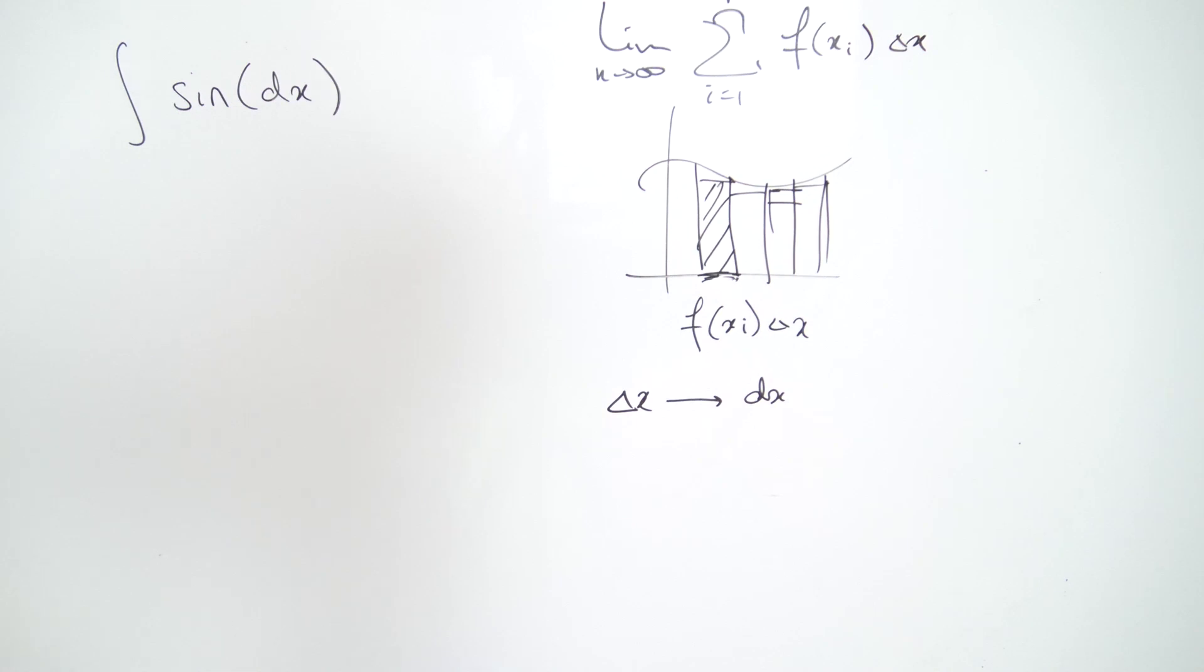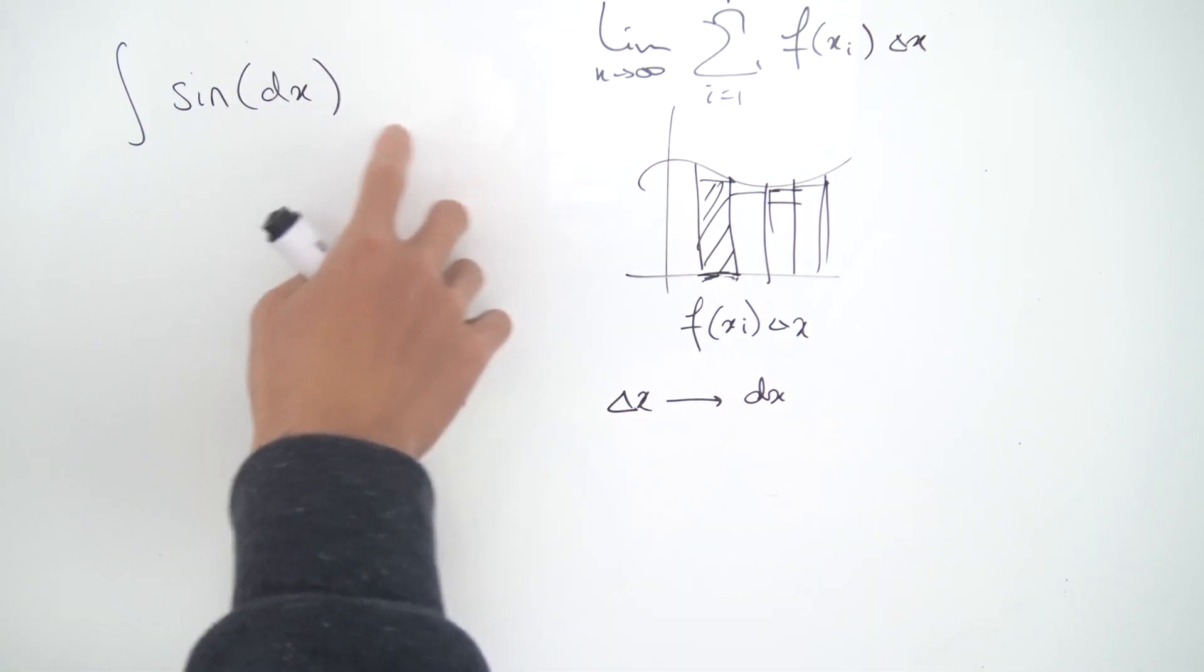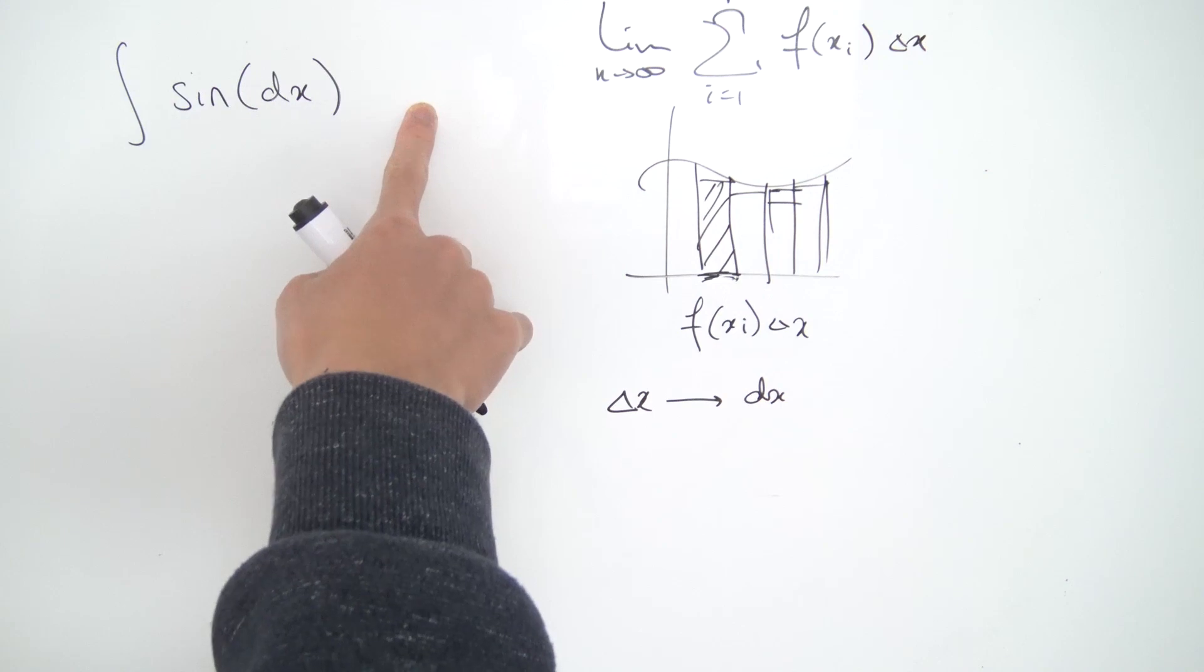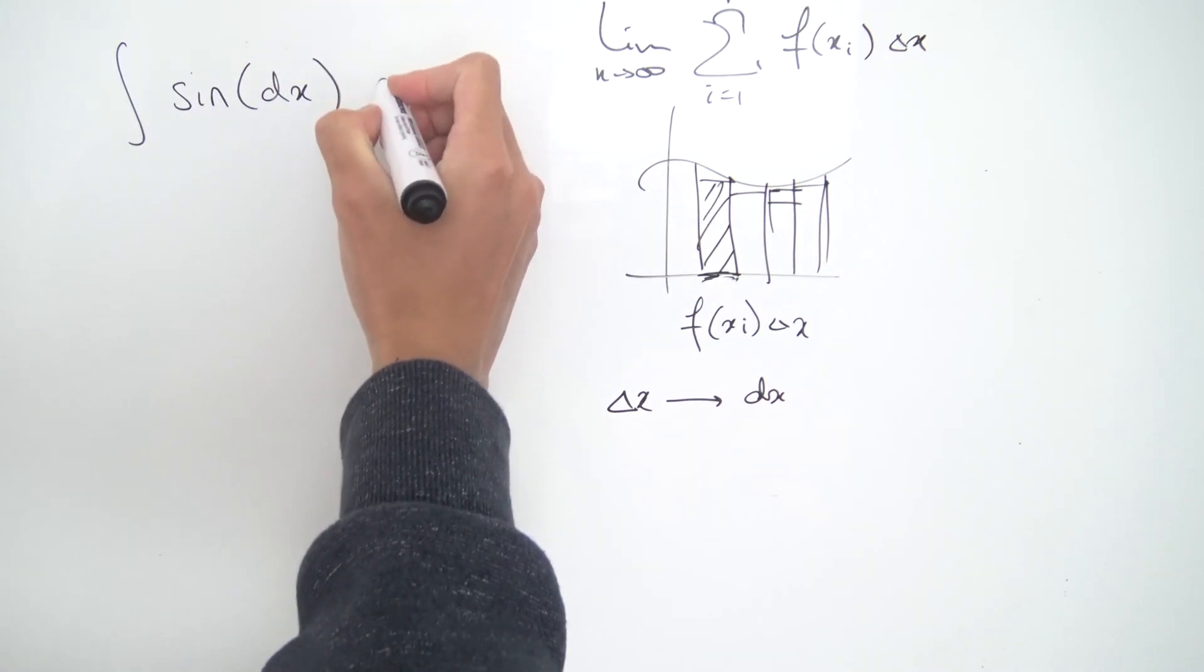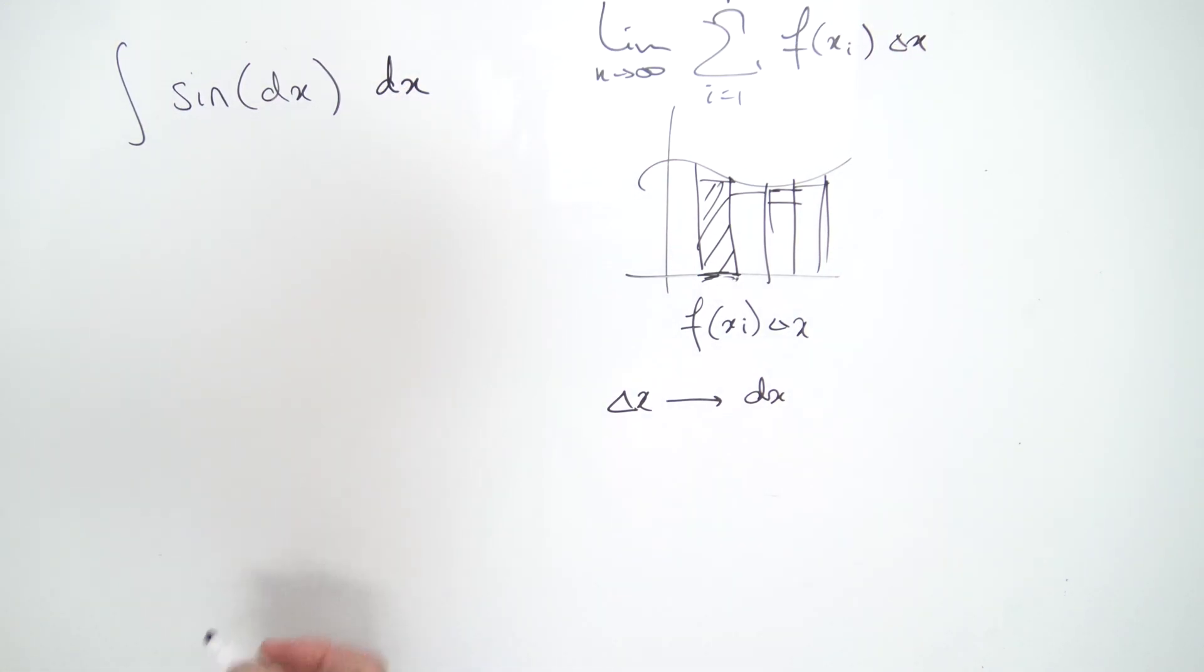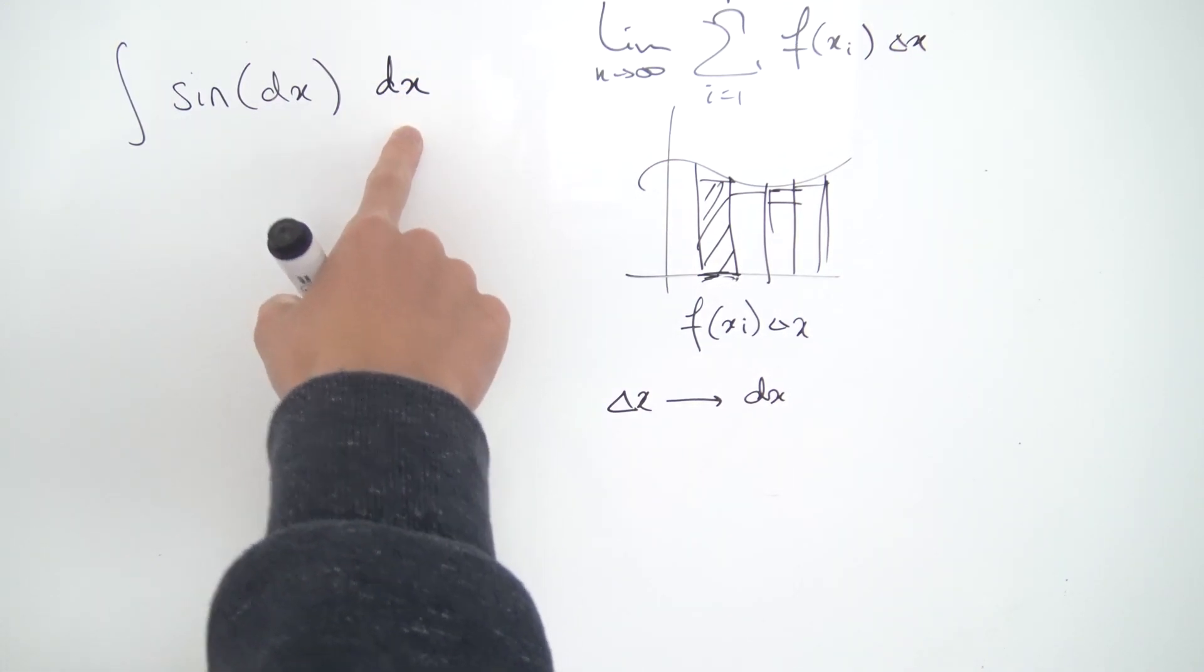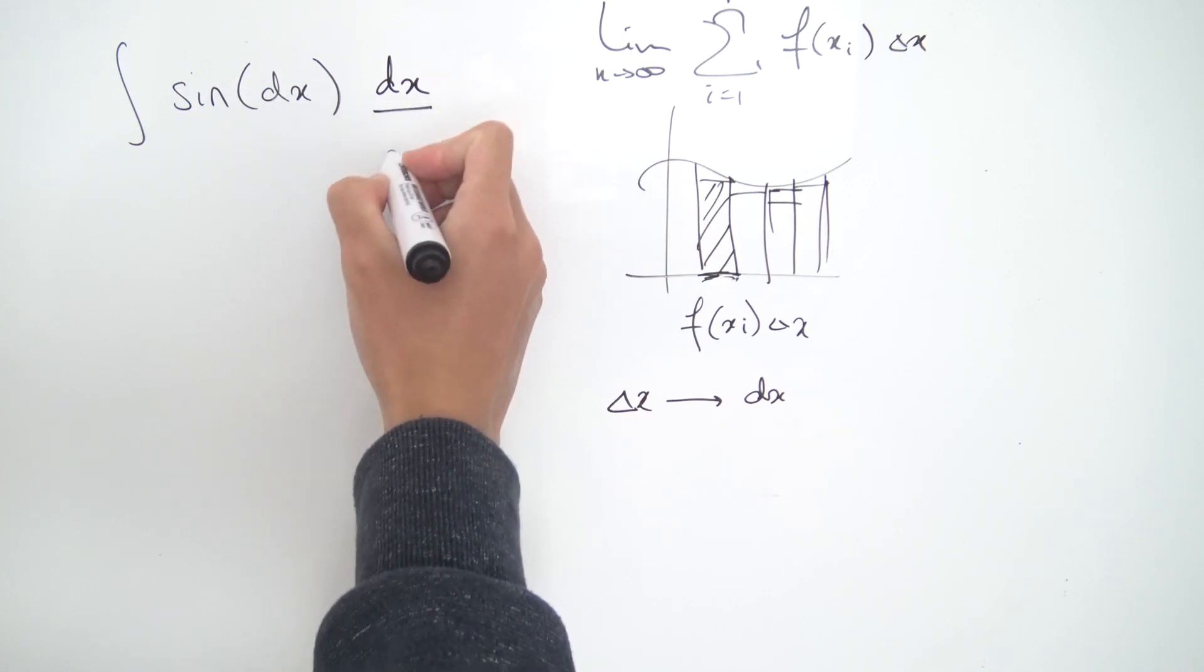Now how does this help us? Well, if you look at this integral, we're kind of missing a dx at the end, because usually we want to integrate something dx. So let's put a dx here, but the problem is we can't just put a dx because that's going to change the value of everything. We also have to divide by dx.